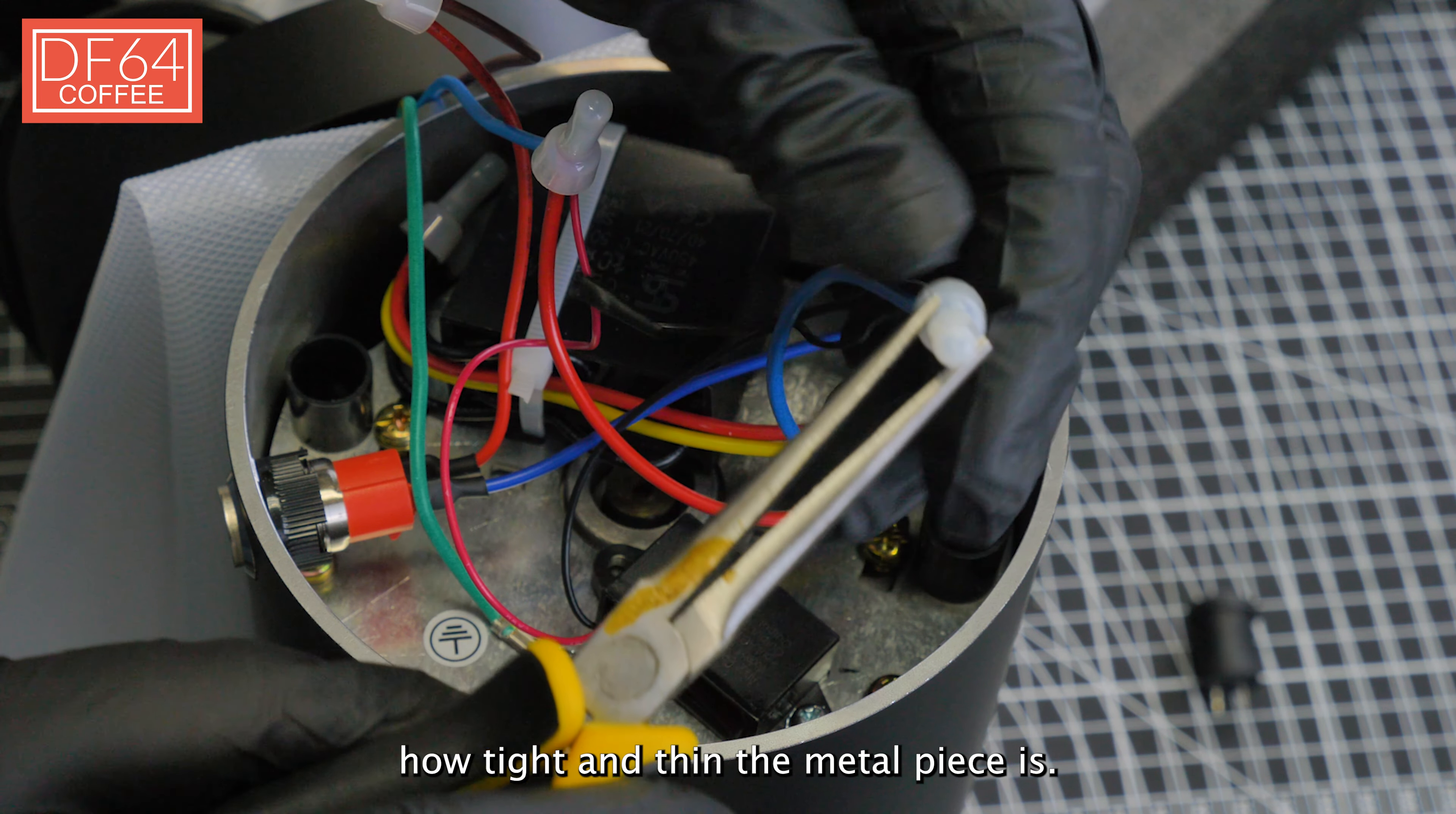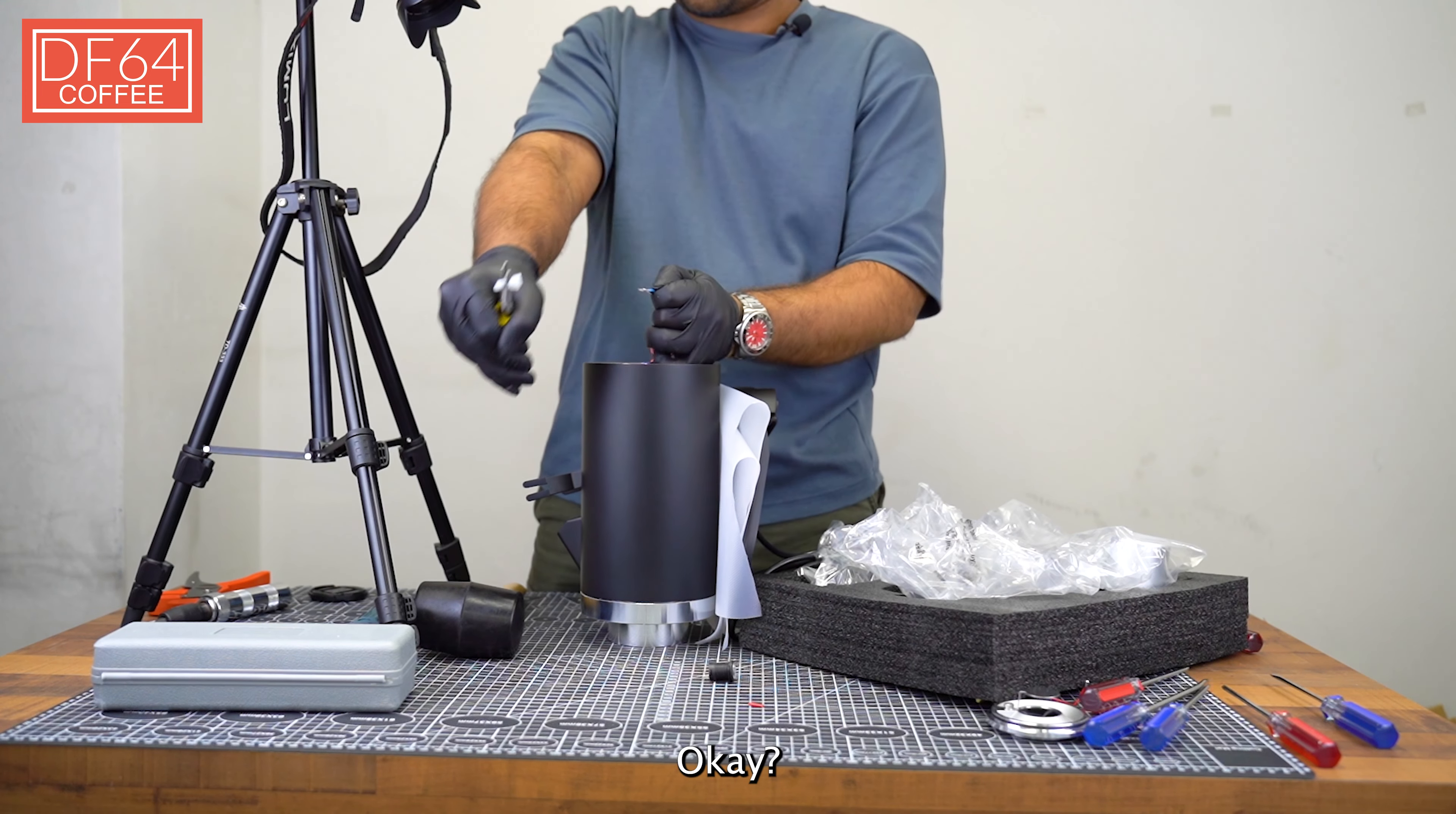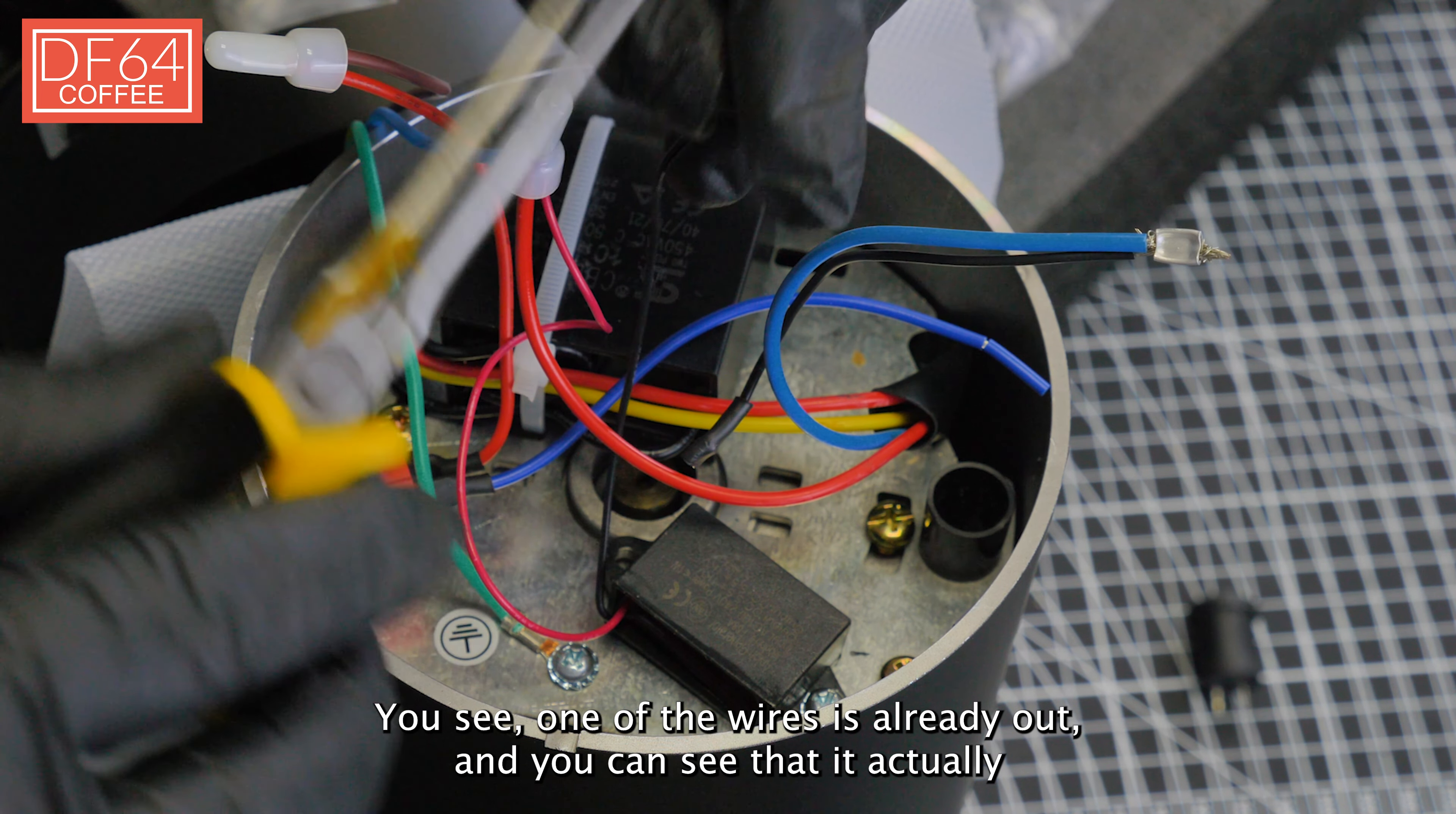Now we're moving on to the second one. Same thing I did for the previous one, I'm going to do it here as well. Just a tight squeeze. You can see through the translucent cap how tight and thin the metal piece is. You don't want to make it any more flattened, just a light squeeze.